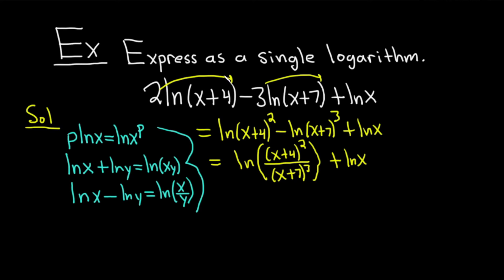All we've done is we've brought the numbers upstairs using the power rule. And then we use the quotient rule because we had subtraction, it became a fraction. And now we have addition. So we're going to use the product rule. So now basically we have the natural log. And I'm going to use a big bracket here, just to really make it look a little bit cleaner.